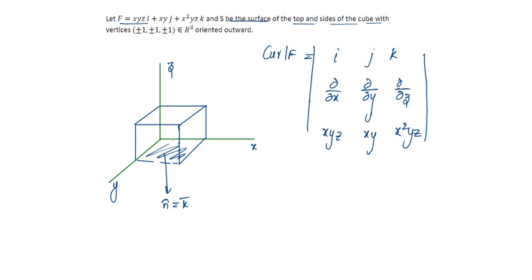On finding curl, it will be equal to i bar into x squared z minus j bar into 2xyz minus xz plus k bar into y minus xz.